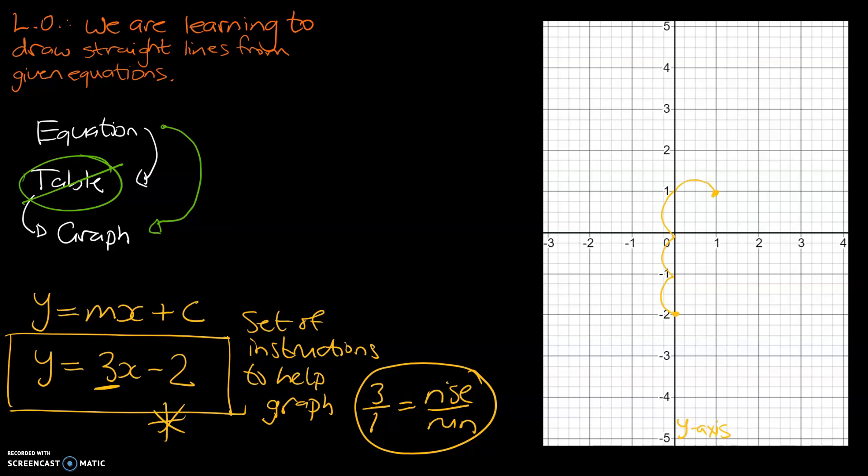We then need to do the same again. We're going to rise 3. We go 1, 2, 3, and we're going to run 1. So, that rise relates to how much it goes up or down, and the run relates to how much we move to the right. So, once you've done that, we've got three points. Let's connect the points. And that there would be our line or our visual representation of the equation y equals 3x minus 2.